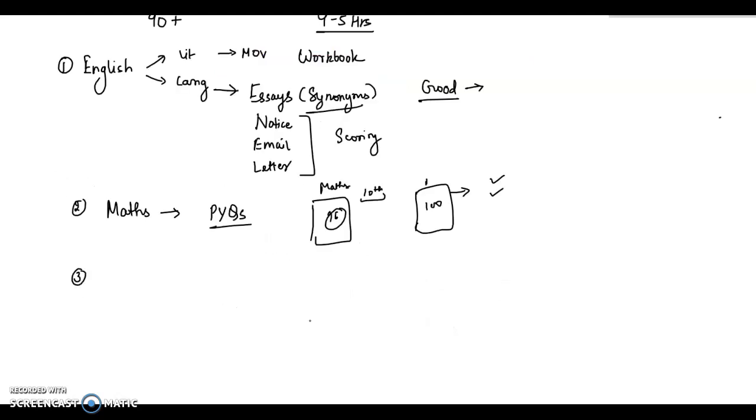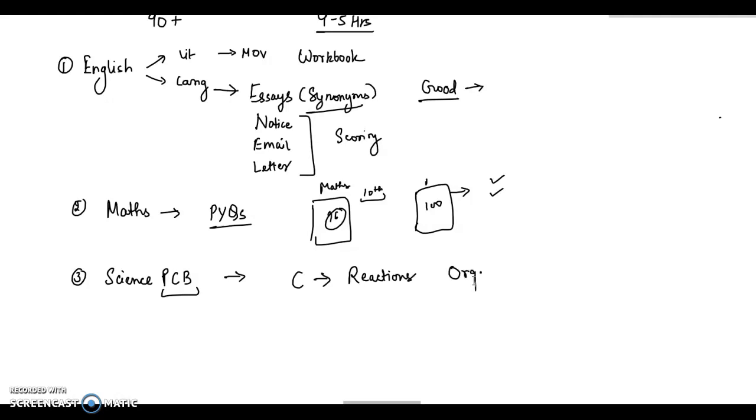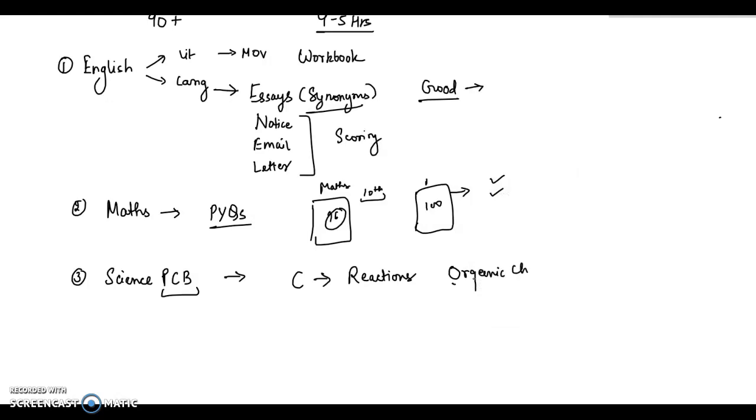Now I'll move on to science part, that is physics, chemistry, and biology. For chemistry, the most important thing is reactions. You'll get a lot of reactions and make sure to finish this chapter, organic chemistry, beforehand. Naming of compounds, the reactions are definitely very, very important. Then we have other chapters like ethyl, ammonia, and then periodic table and so on. For these chapters, you have to understand the concept.